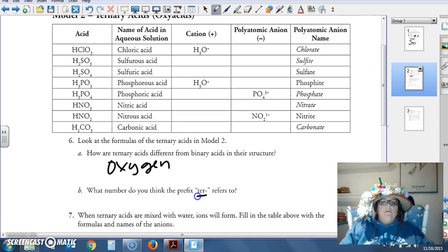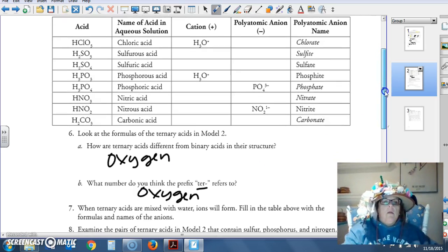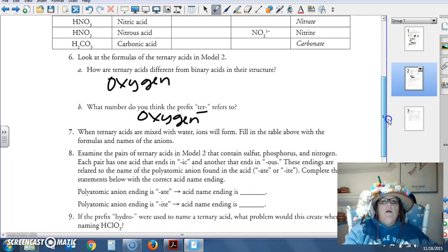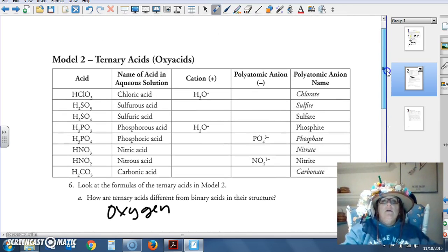What do you think ternary means? Probably oxygen, right? When ternary acids are mixed with water, ions will form. Fill in the table above with the formulas and names of the anions. So notice.